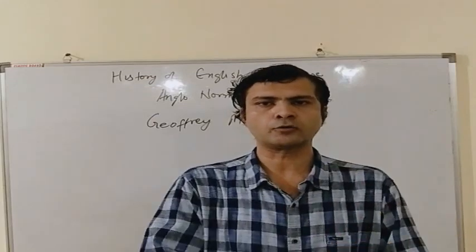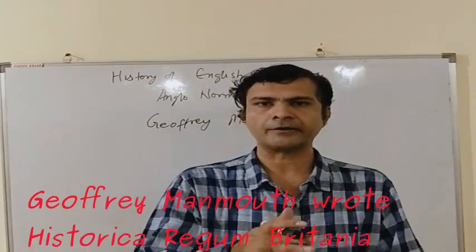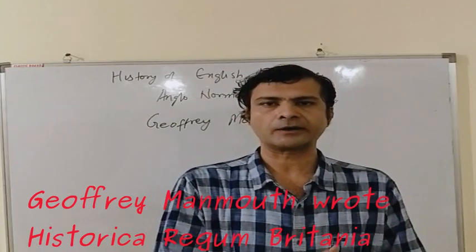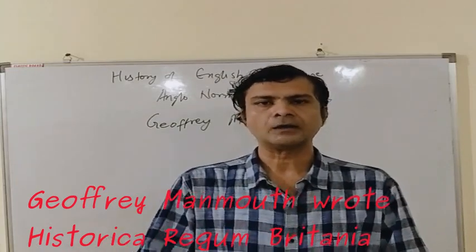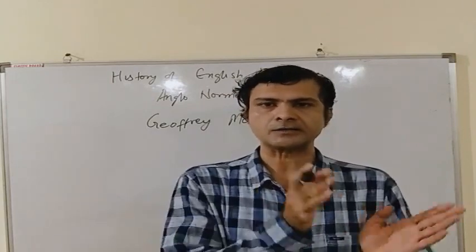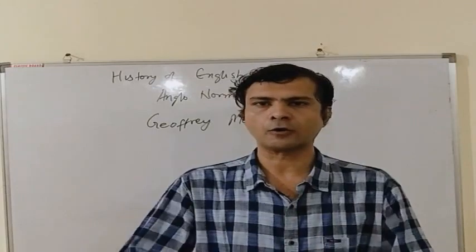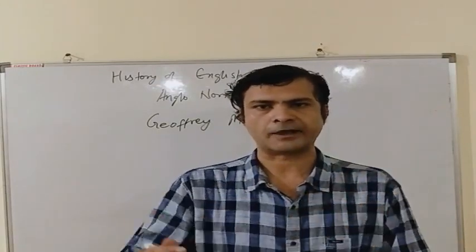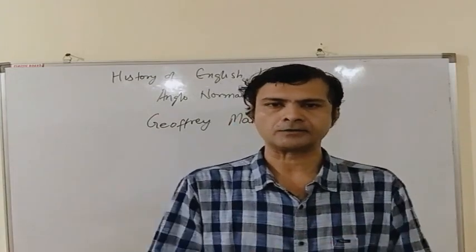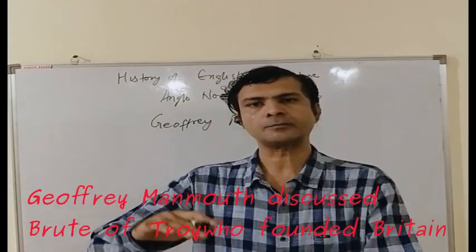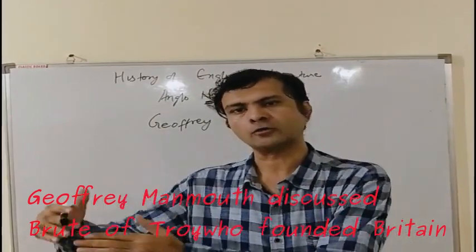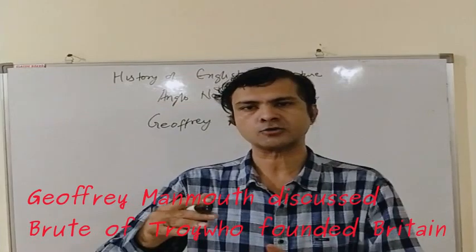The very first poet who wrote extensively about the matter of Britain was Geoffrey Malmoth. He was known for his immense work in British historiography. He wrote a work known as Historia Regum Britannia, in which he discussed the lives and deeds of all the kings from 2000 years before his time, starting with Brute of Troy who founded Britain, and reaching up to the Anglo-Saxons and Anglo-Normans.